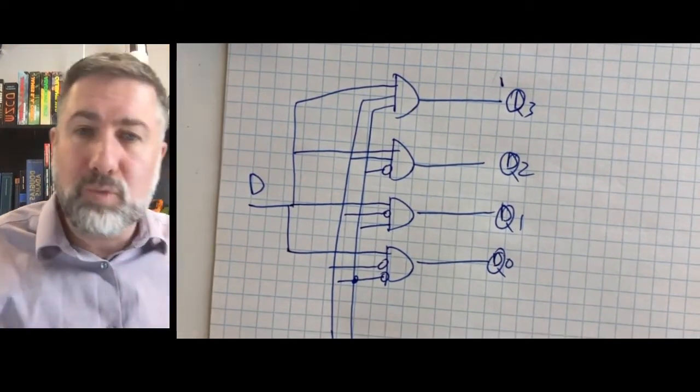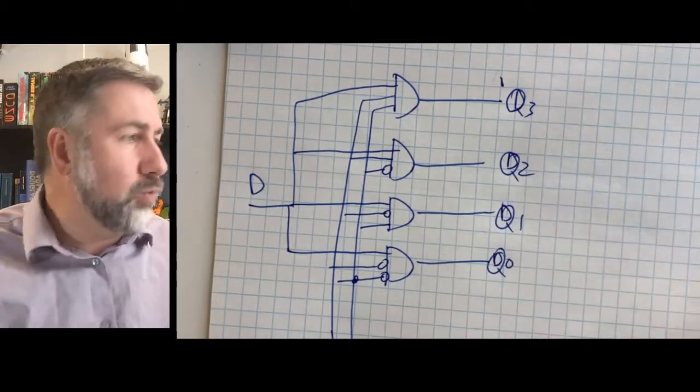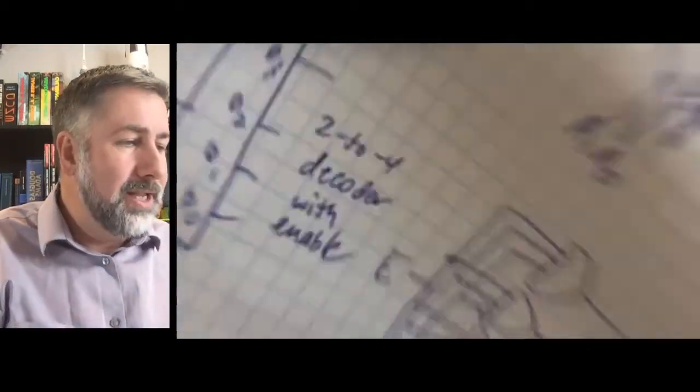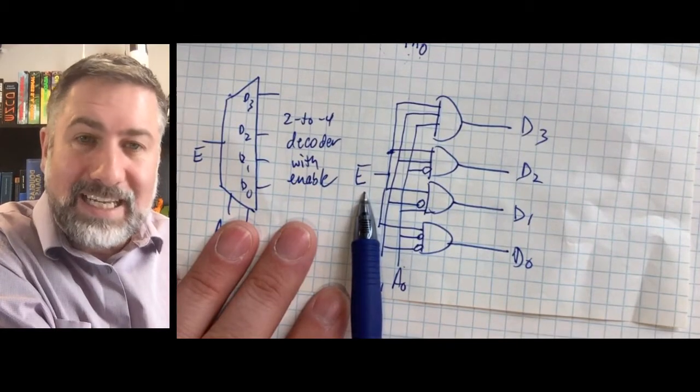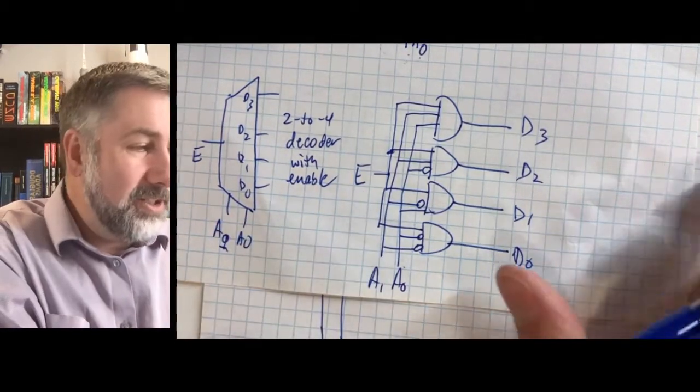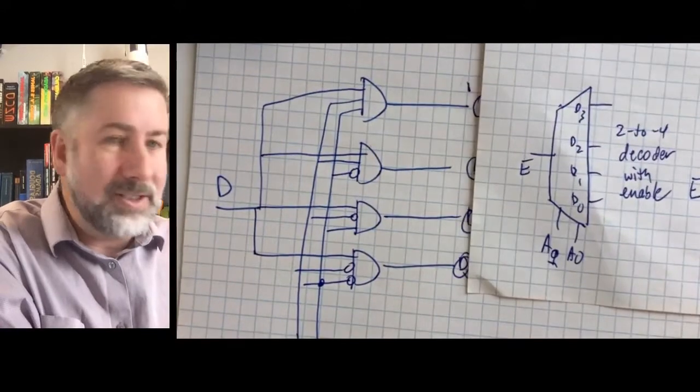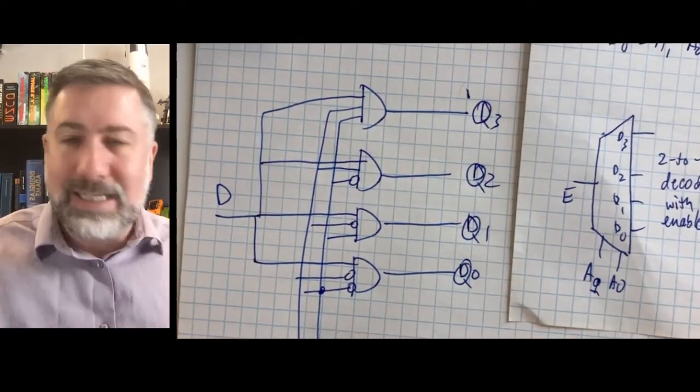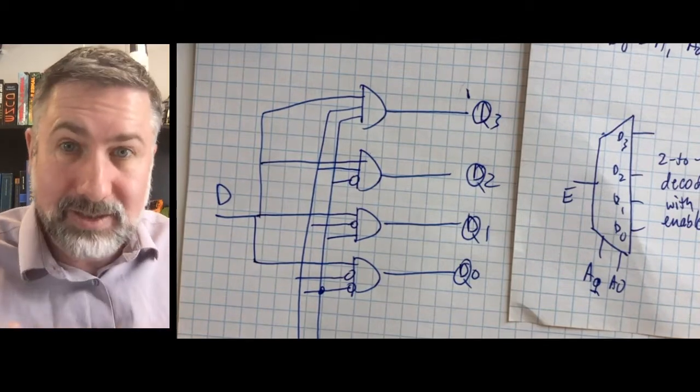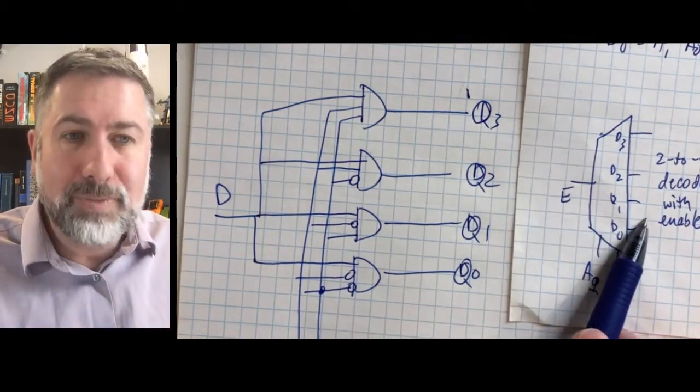Now this should already look a little similar because when we built out the decoder, that is precisely what we built except we called this an enable instead of calling it a data line. The functional requirements of these two devices are identical. A demultiplexer and a decoder are the same device as long as we have an enable on the decoder.